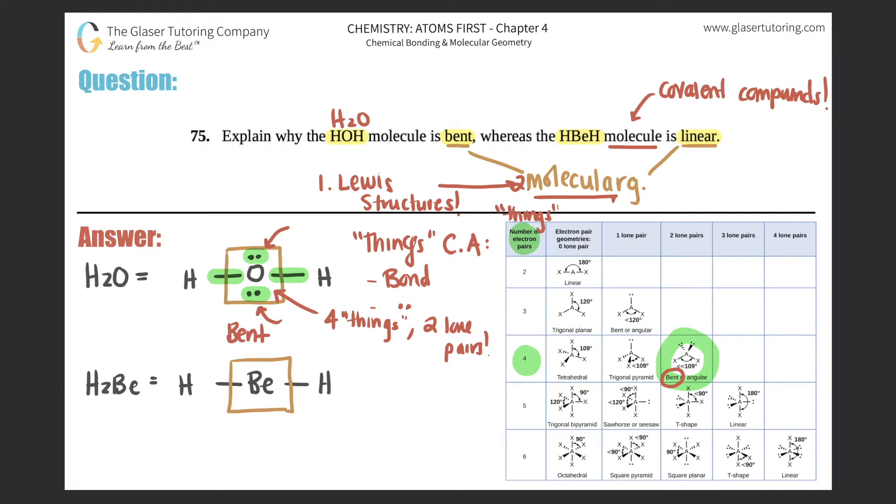Beryllium, on the other hand, how many total things does this central atom have? Beryllium only has two single bonds—one and two. It doesn't have any lone pairs. So total it would have two things, two things zero lone pairs, and that's what we're looking for here. There's only one representation of something that has two total things, which is linear. That's why this would be linear.